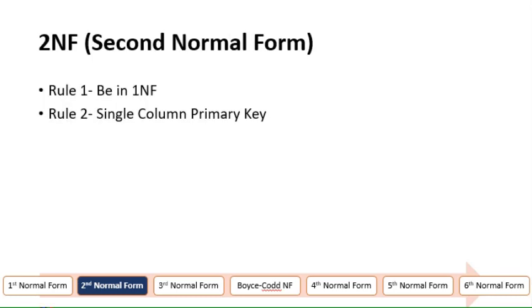Now let's look at the second normal form. The table must be in the first normal form, and secondly, it must have a single column primary key.